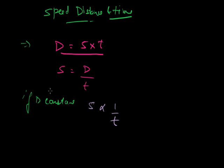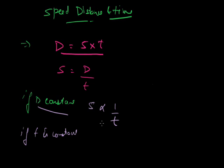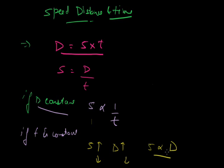But that is in the case when D is constant. Second thing: if time is constant, if T is constant, then S and D are the variables. S equals D upon something which is constant. Therefore when speed is increased, D will also increase, or when speed is decreased, D will decrease. That means speed is directly proportional to distance.